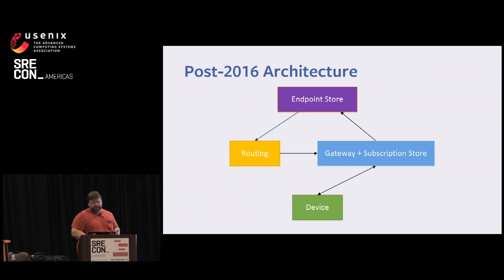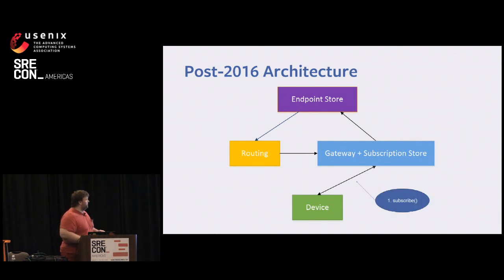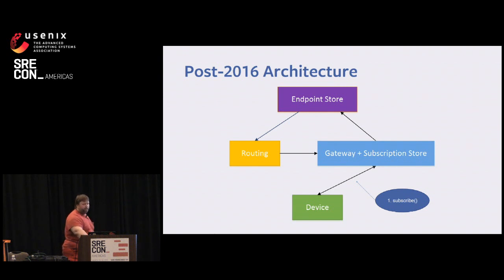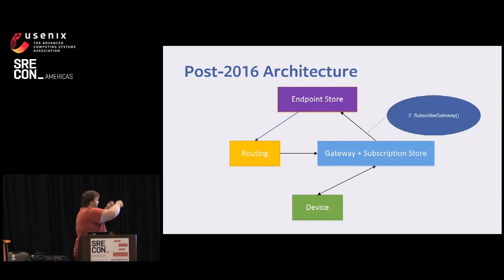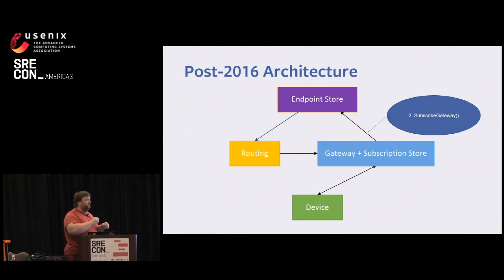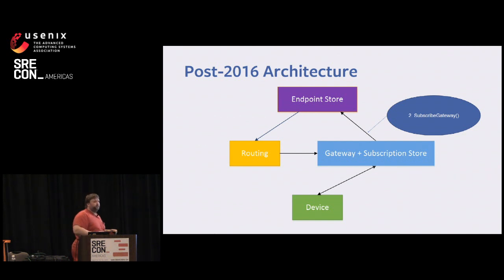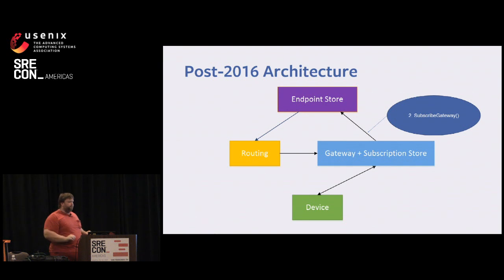Let's trace out how it works. Again, you look at a goat pic. Your device will subscribe to some live-like topic. The gateway will get it, and it'll just slam it in memory — done. It'll then send a little tickle out saying 'I'm interested in this topic,' and Endpoint Store will say 'cool, you're now mapped.' At that point, you're subscribed.